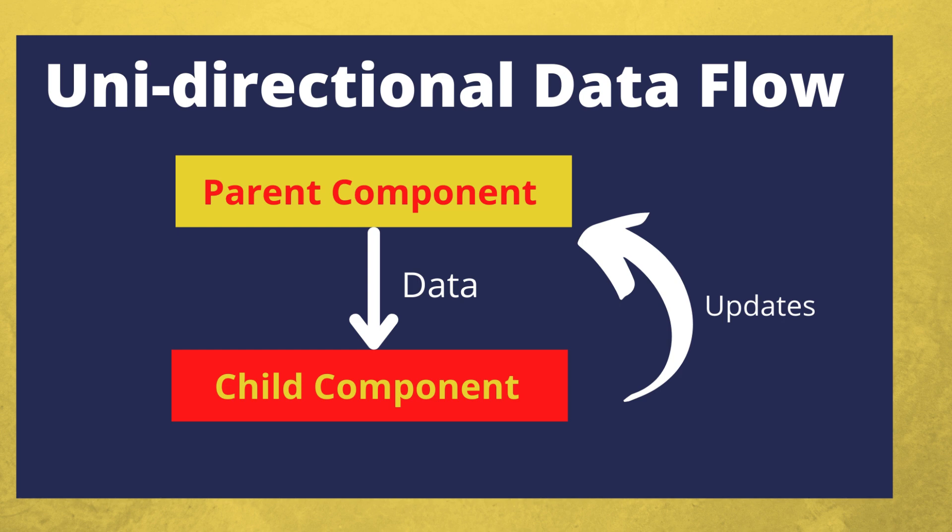Unidirectional data flow: The data flow in React is unidirectional. As a result, developers frequently nest child components within parent components when developing a React app. Because data flows in a single path, debugging faults and determining where problems arise in an application at any given time becomes easier.